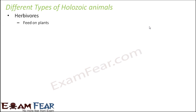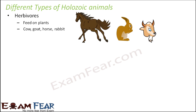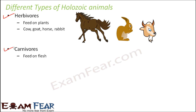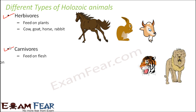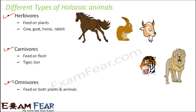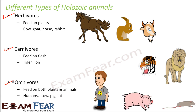Let us look at the various types of holozoic animals. The first category is herbivores, which feed only on plants — examples are cow, goat, horse, and rabbit. The next category is carnivores, which feed on flesh, that is other animals — like lion and tiger. The third category is omnivores, which feed on both plants and animals; the best examples are humans, and also crow, pig, and rats.